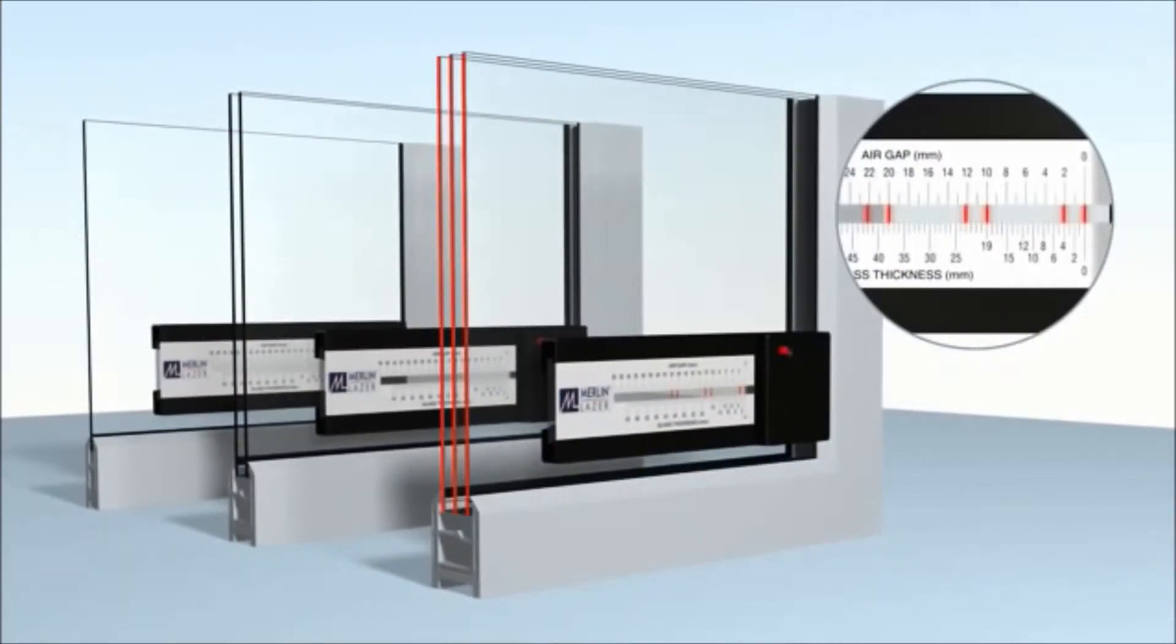On triple glazed units, three pairs of red laser lines are visible. Again, each pair is an individual pane of glass with the distances between them the air spaces.